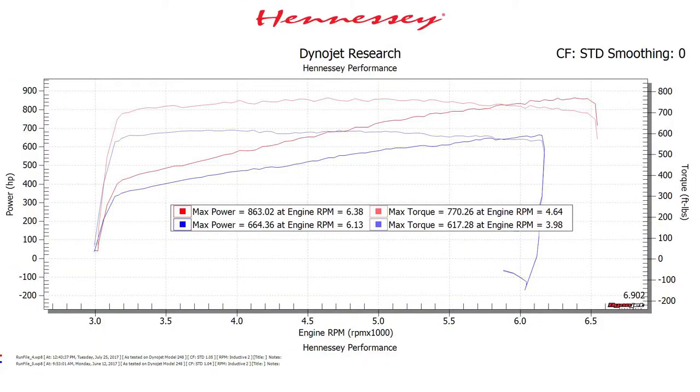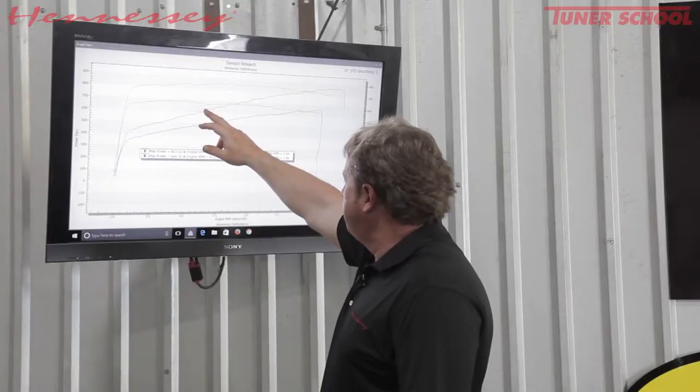You have the very linear nature of the horsepower curve, so right at 3500 RPM, you're almost making 500 horsepower at the wheels. You go past 600 wheel horsepower.